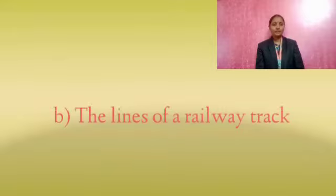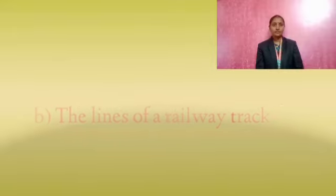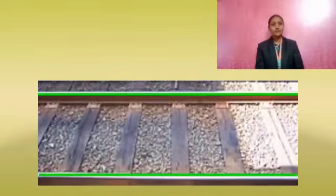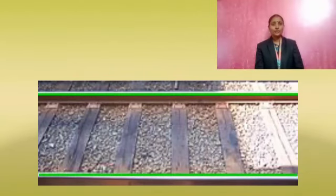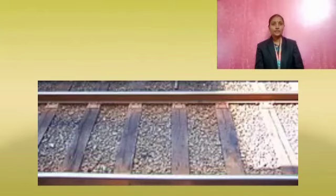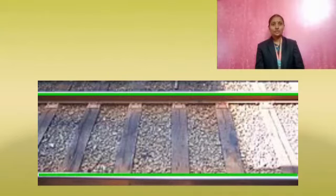Option B: the lines of an elevator. These are the lines of an elevator which do not meet however far they are extended. So it is not a model of perpendicular lines — it is a model of parallel lines.